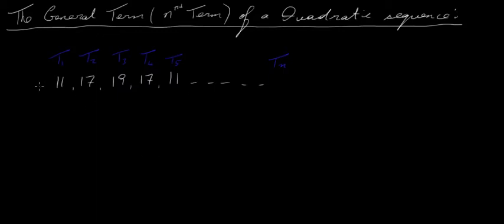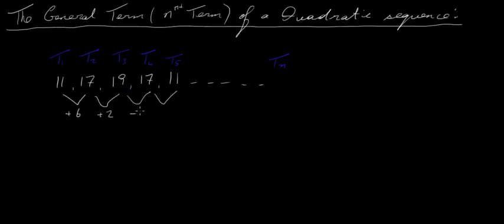Let's look at the first difference or common difference. Going from 11 to 17 I'm adding 6; from 17 to 19 I'm adding 2; from 19 to 17 I'm subtracting 2; and from 17 to 11 I'm subtracting 6. The first differences are not all the same, so this sequence is not linear.